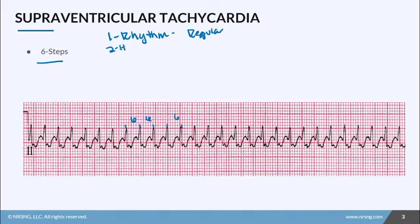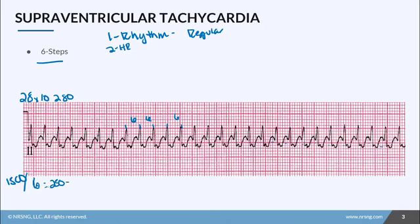Step number two, let's count the heart rate. Counting the QRS complexes across the six-second strip gives us 28 beats. So 28 times 10 equals 280. However, because it's abnormal, let's use the 1500 method because it's a lot more accurate. 1500 divided by six gives us 250 beats per minute. That is more accurate and very helpful with these kinds of rhythms, so our heart rate is 250 beats per minute.